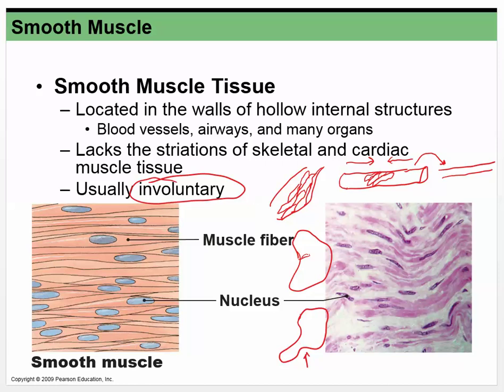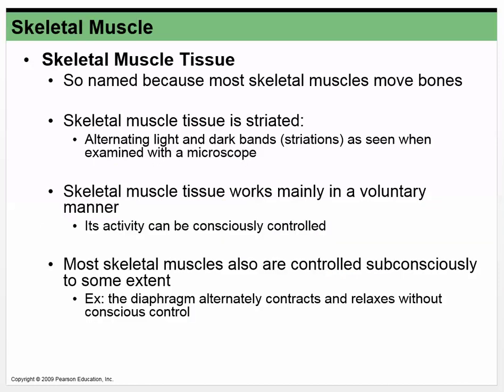Smooth muscle is not striated — you can't see those striations. It works in the same way fundamentally, but because it's so disordered, you don't see those nice little lines that are lined up.